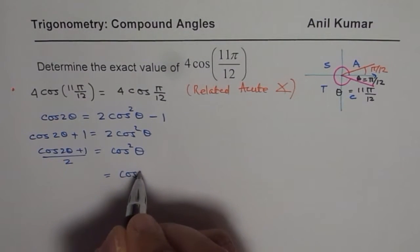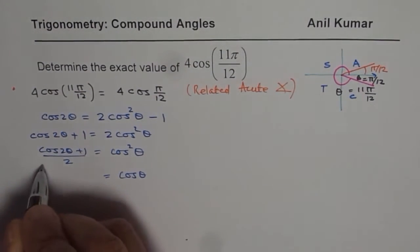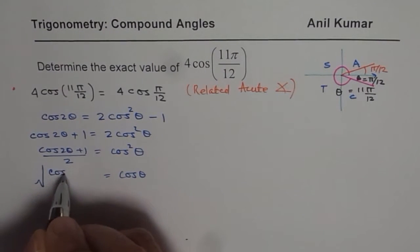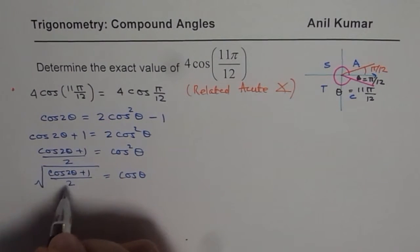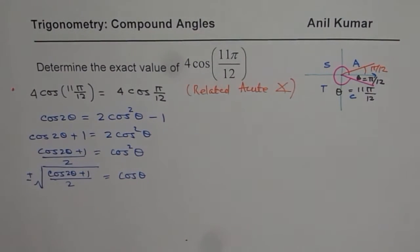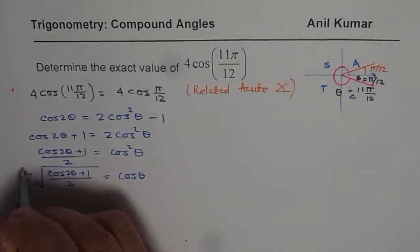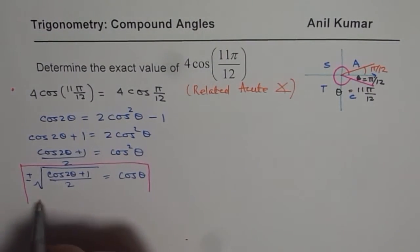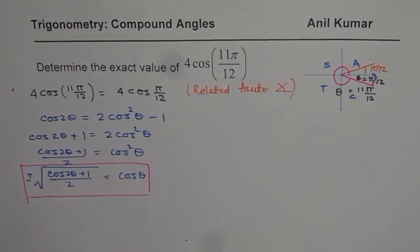Or cos θ is equal to square root of cos 2θ plus 1 divided by 2. Whenever you do square root, you have to do plus and minus. So this is a standard formula. So I have just derived it for you. But you could use this formula directly also. Now, how does that help us? Let us see that part now.